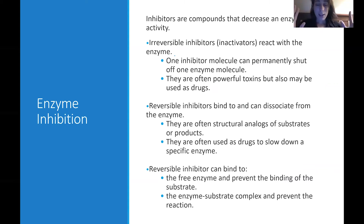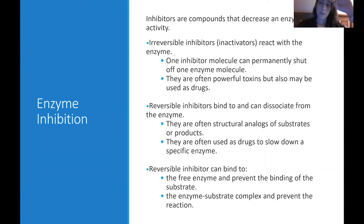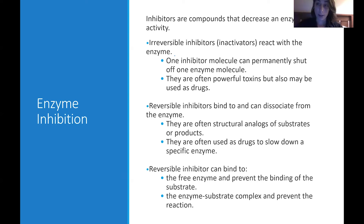To define an inhibitor, they are any compound that decreases an enzyme's activity. They're different from a substrate in that sense, because they are going to decrease the activity — that's the word inhibition. They're stopping the enzyme from doing its normal activity or slowing it down. There are different types of inhibitors that we'll be talking about.